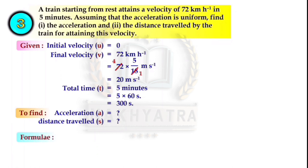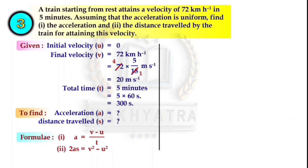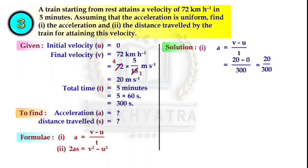The formulas we use: for acceleration, a = (v - u)/t; for distance, 2aS = v² - u². Pause the video and try to solve this yourself. For finding acceleration: A = (20 - 0)/300 = 20/300. Cancelling, we get A = 1/15 meter per second square.